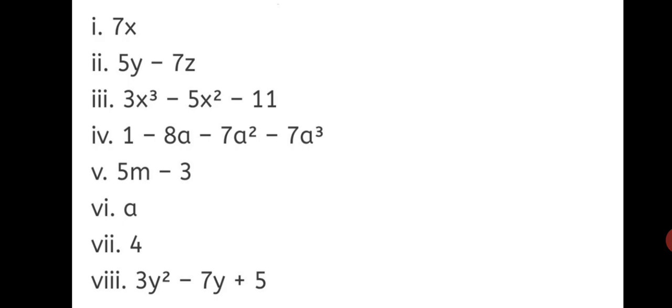First one, 7x, it is a monomial because only one term. Second, 5y minus 7z, it is a binomial, two terms. Third one, 3x cube minus 5x square minus 11. How many terms can you see in this expression? Three terms. So, it is called a trinomial.